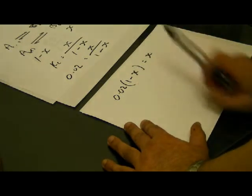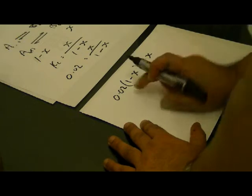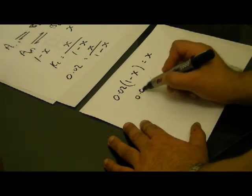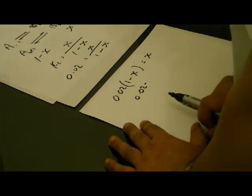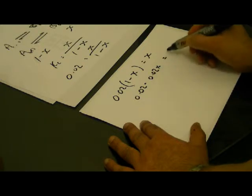Now if I expand this bracket, I end up with 1 times 0.02, which is 0.02 minus 0.02X, and that's all equal to X.